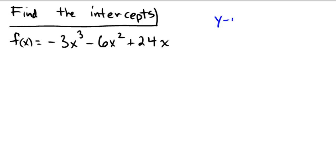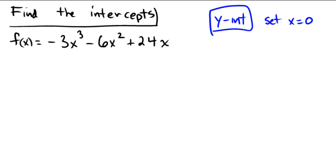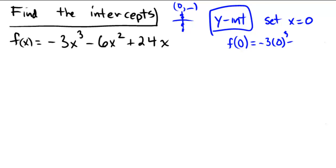To locate the y-intercept, you set x equal to zero, because this will figure out where you hit the y-axis. Every point on the y-axis has an x-coordinate of zero. So if we take this function f(x) and replace x with zero, we'd be calculating f(0), which would be negative three times zero cubed minus six times zero squared plus 24 times zero.